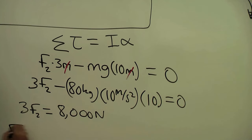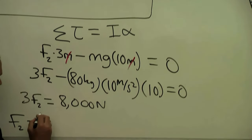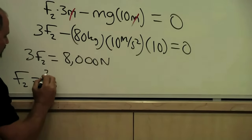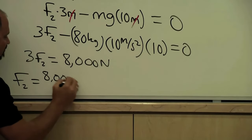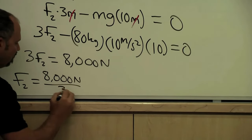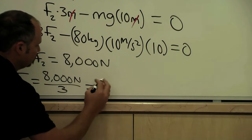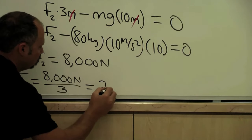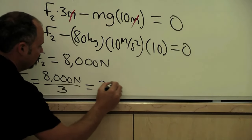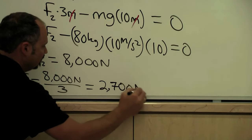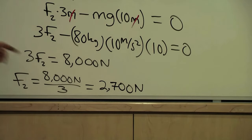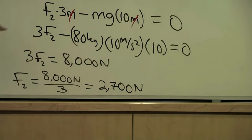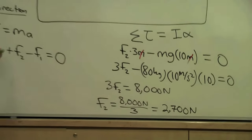Or F2 is equal to 8000 newtons divided by three which is about 2700 newtons. So there's our value for F2 and then once we know F2 we can plug in here to get F1.